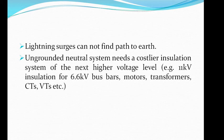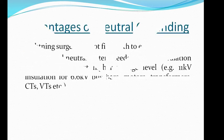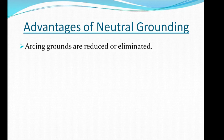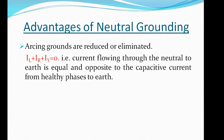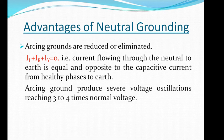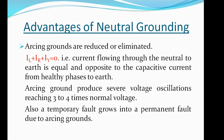Modern electrical relaying and protection systems are designed considering the simplicity and sensitivity of a grounded network. There are several advantages of a grounded system. The main advantage is that arcing grounds are reduced or can be completely eliminated in a grounded network, where iL + iR + iY = 0 — that is, the current flowing through the neutral to earth is equal and opposite to the capacitive current from healthy phases to earth.